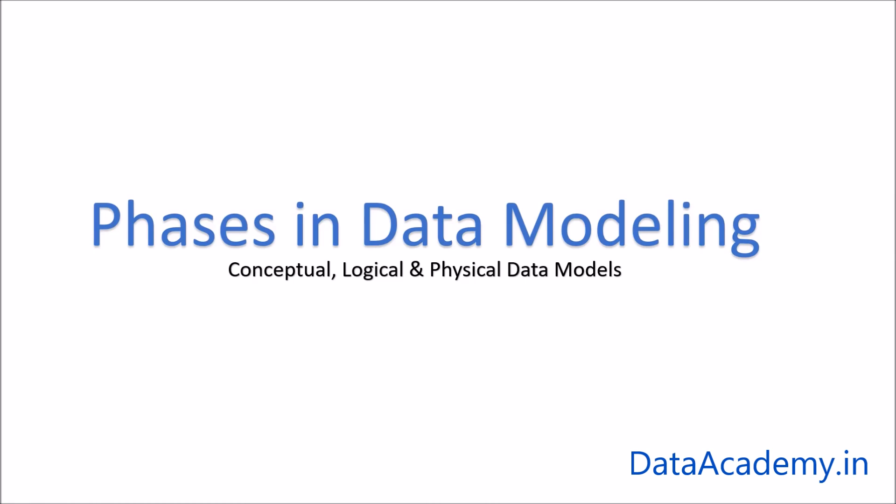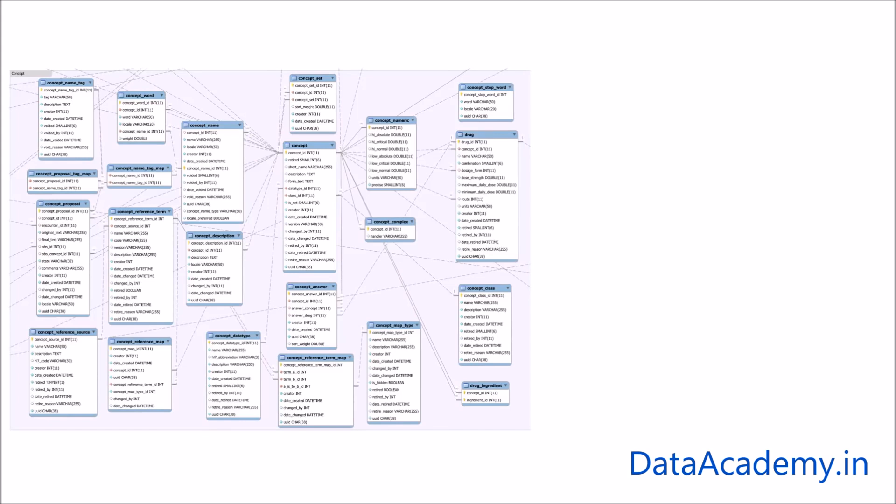Hi, in this video we are going to learn about different stages of a data model. But first, what is a data model? A data model is simply a diagram that displays a set of tables and the relationship between them. We can understand a lot more by looking at a data model diagram than by looking at a list of tables.